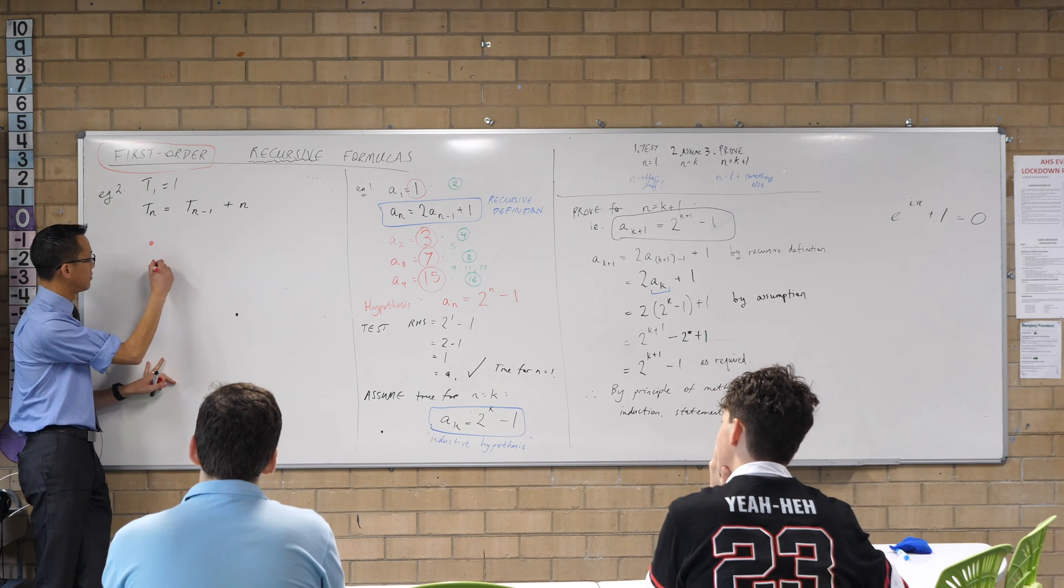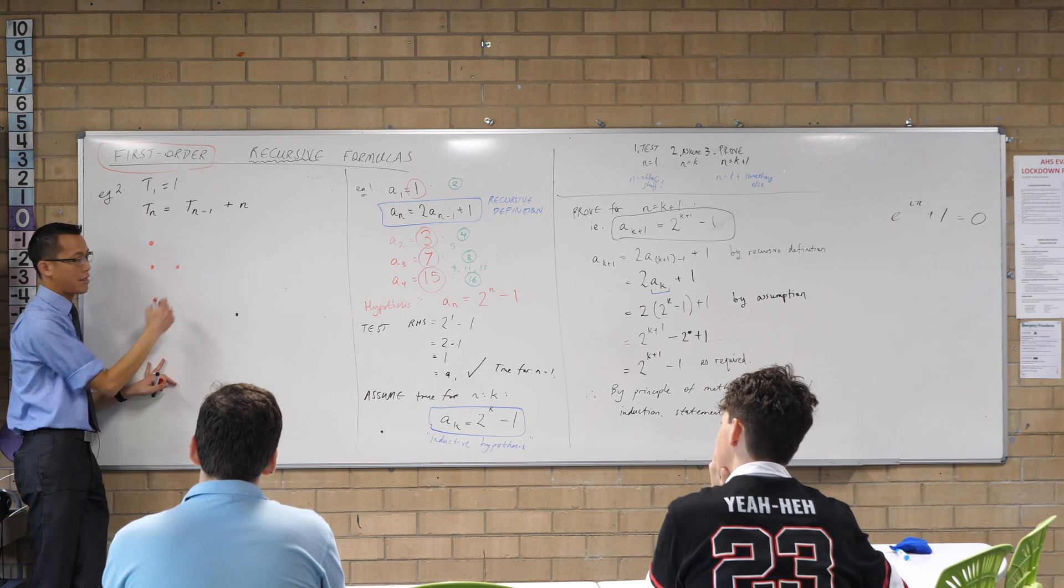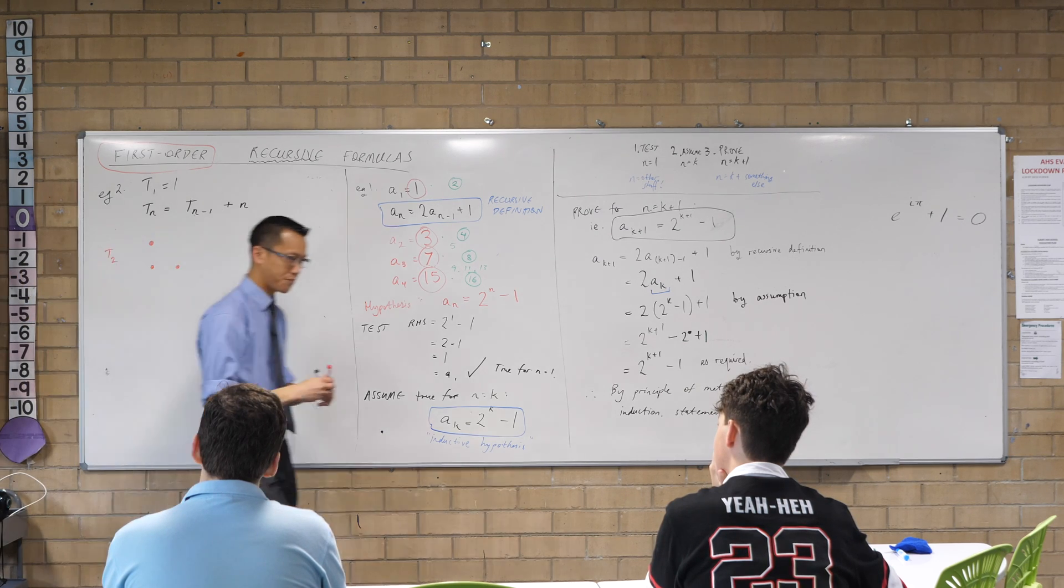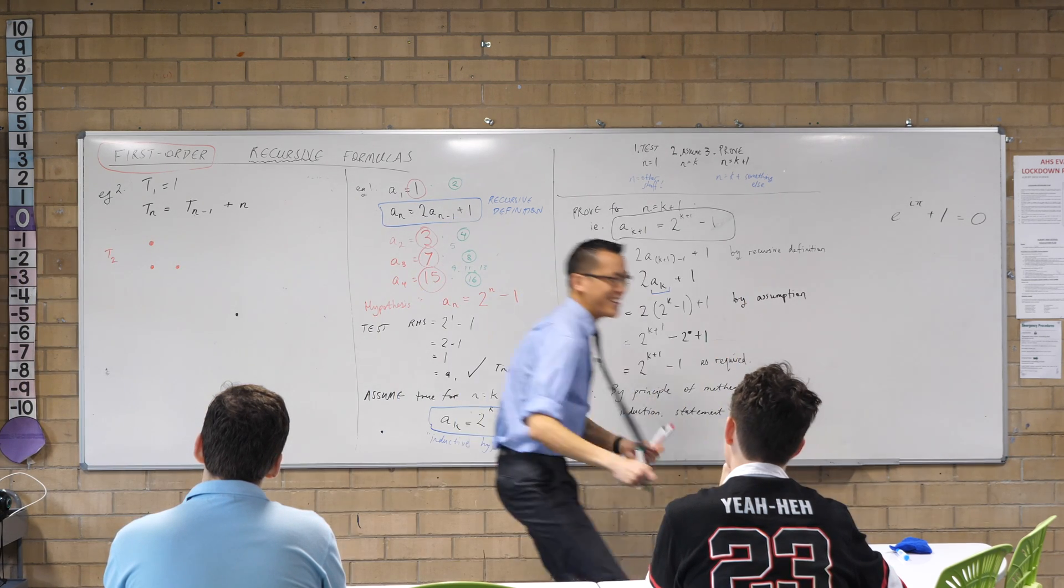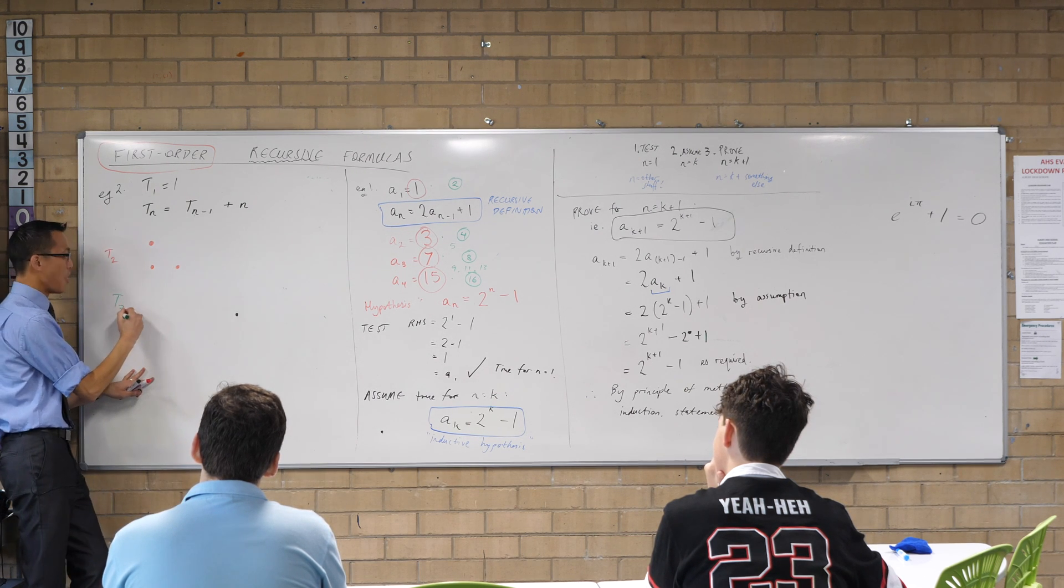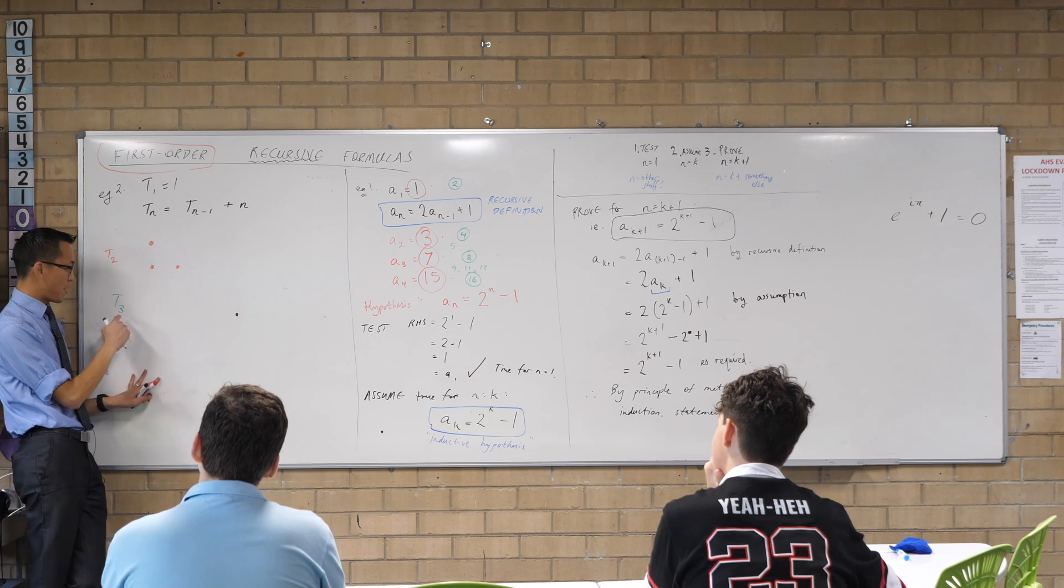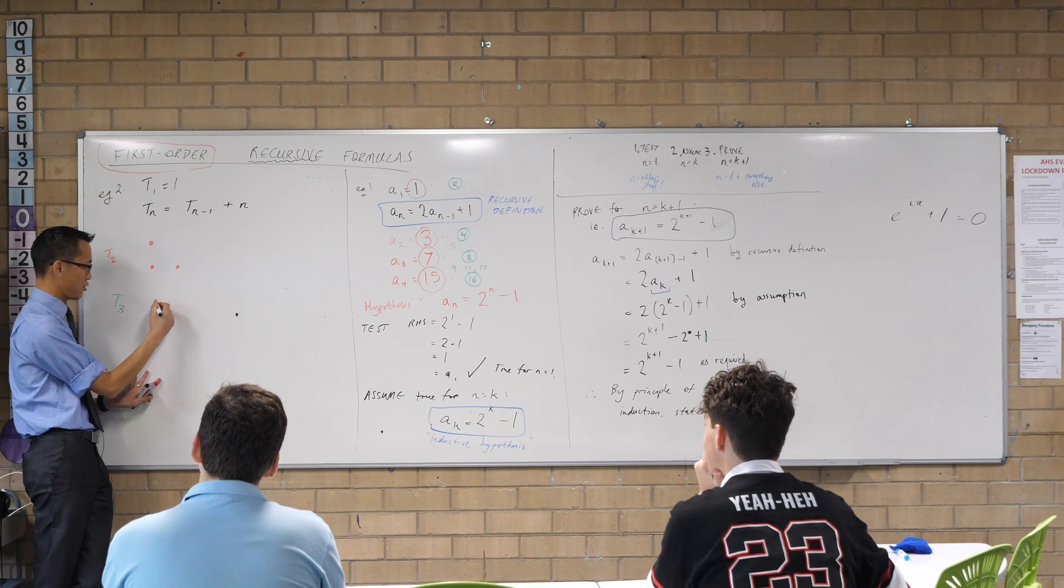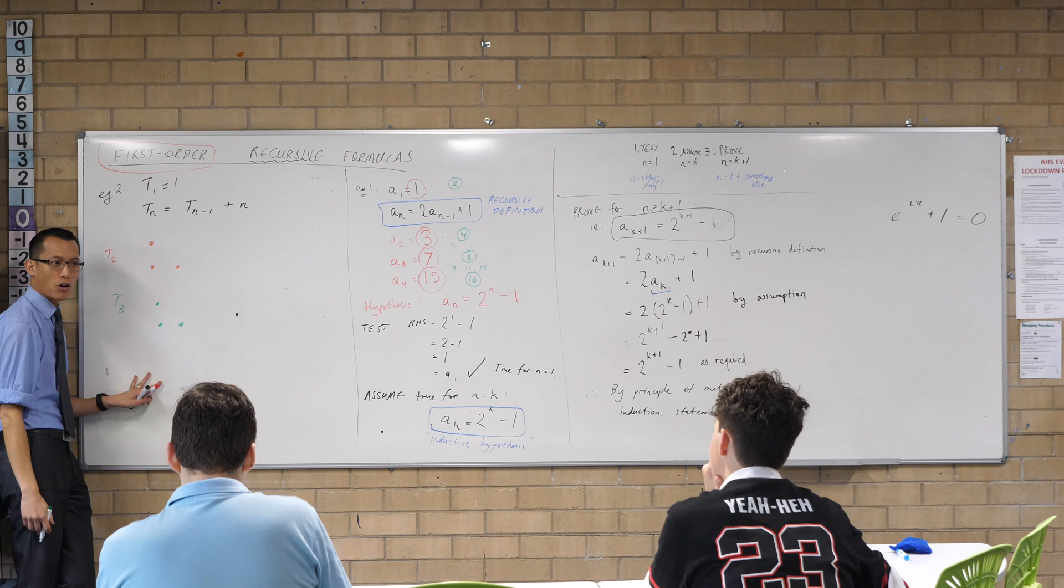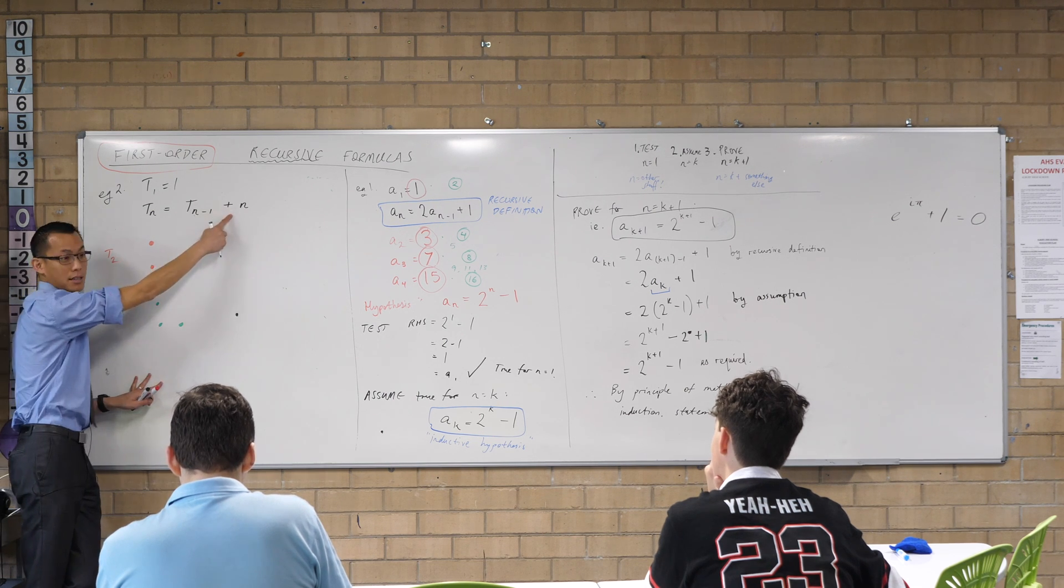What's term two gonna look like? I'm gonna add two on, so there is term two. Term three, I've got to start with term two, which looks like this, and then I've got to add on the n, right? That's what gets me to the next term, which looks like this.